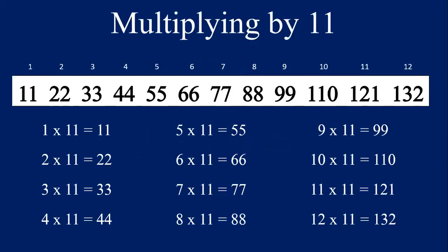Eleven, twenty-two, thirty-three, forty-four, fifty-five, sixty-six, seventy-seven, eighty-eight, ninety-nine, one hundred and ten, one hundred and twenty-one, and one hundred and thirty-two. Well done.